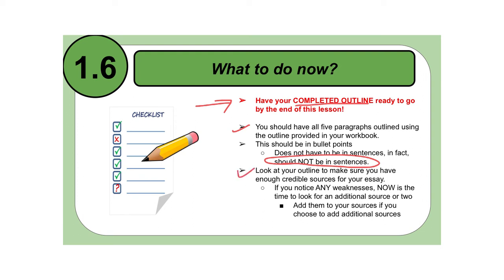Look at your outline to make sure you have enough credible sources for your essay. If you notice any weaknesses, if you're a little confused, have a colleague look at it. Three before me, always remember that. Have a colleague look at it. And then if you or three of you look at it and think there are any weaknesses, now is the time to notice that and find other additional sources. If you and your colleagues look at your outline and see some kind of discrepancy or something there, now is the time to go ahead and find sources to fill in those gaps.